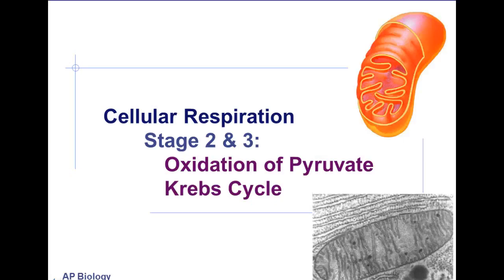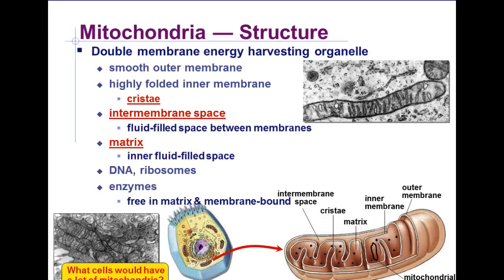Now let's move on to phases two and three of cellular respiration, which involve the oxidation of the pyruvate molecule just produced, and the Krebs cycle. We're now moving inside the mitochondria from the cytosol where glycolysis occurred — more specifically, into the mitochondrial matrix, which is an inner fluid-filled space similar to the cytosol, which makes sense since the mitochondria was most likely its own bacteria at one time.